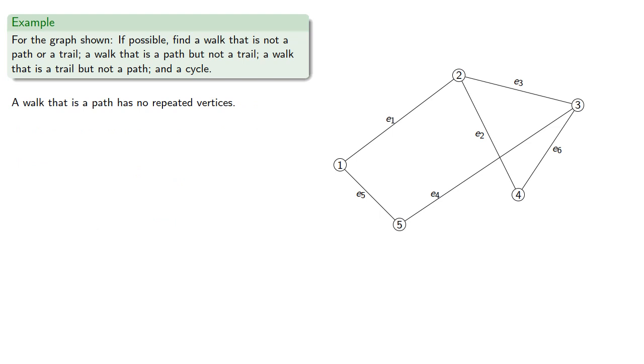A walk that's a path has no repeated vertices, but if it's not a trail, we reuse an edge. However, in order to reuse an edge, we have to revisit the vertices. So it's not actually possible to find a path that is not a trail.